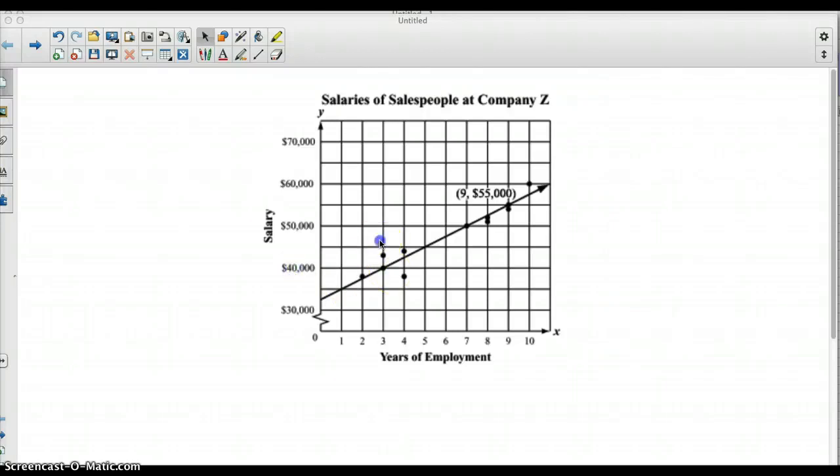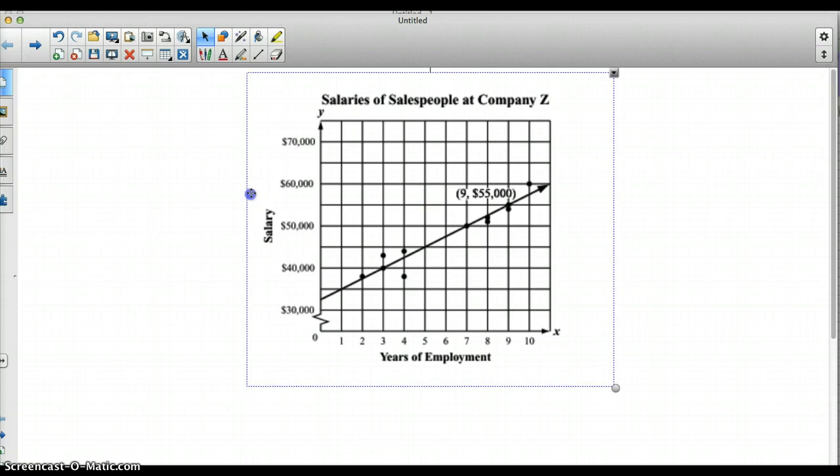Okay, so in order to find the equation of the line of best fit, what you're going to have to do is you're going to have your scatter plot, like I have shown here. And you're going to have your points plotted, and then you're going to manually draw in your trend line.